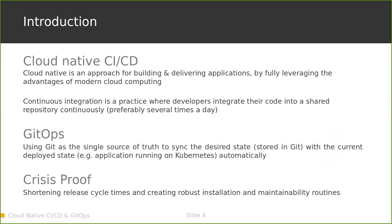First of all, what is cloud native? Cloud native is an approach for building and delivering applications by using the advantages of a modern cloud computing environment. CI is continuous integration — a practice where developers integrate their code into a shared repository continuously and as often as possible, preferably several times a day.